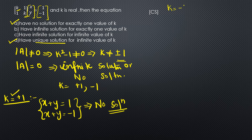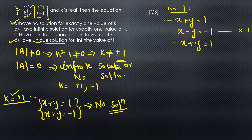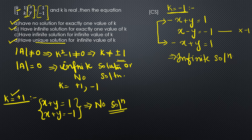For k equals minus 1, the equations become minus x plus y equals 1 and x minus y equals minus 1. Multiplying the second equation by minus 1 gives minus x plus y equals 1, which is identical to the first equation — so we effectively have one equation, meaning there are infinitely many solutions for exactly one value of k. Option B is also true. Option C is wrong.